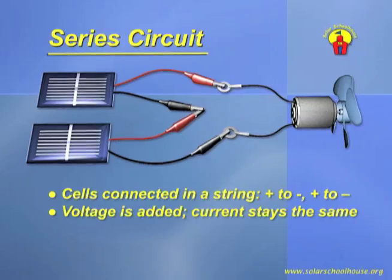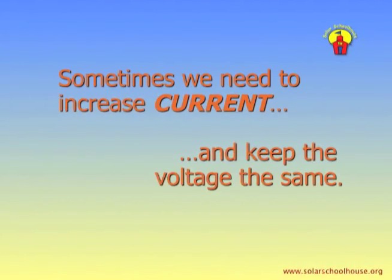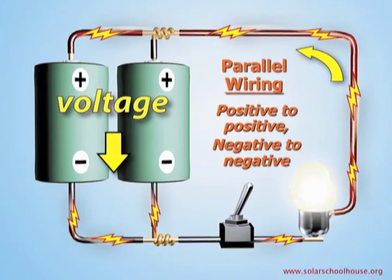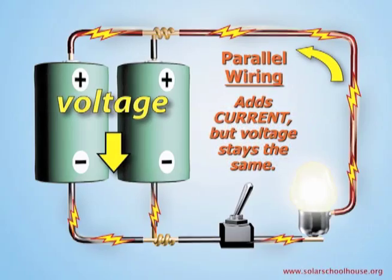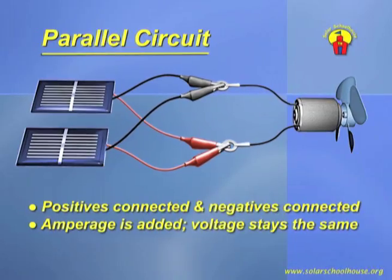We've just learned how to use series wiring to increase the voltage or pressure pushing electricity through a circuit. Sometimes, however, we need to increase the current — the actual number of electrons moving through the wires — and keep the voltage the same. To do this, we use parallel wiring. In parallel wiring, we connect the positive ends of both batteries together, and we connect the negative ends of both batteries together. Instead of electricity flowing in a series, the currents produced by the batteries are added together, but the voltage remains the same. With solar cells, the red or positive wires are connected together on one wire leading to the load, and the black or negative wires are connected to the other lead. By connecting positive wires together and negative wires together, we've created a parallel circuit, and the currents produced by the solar cells are added together. The voltage in the circuit, however, is only as much as one cell can produce.